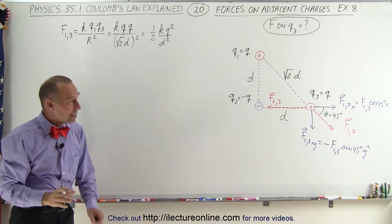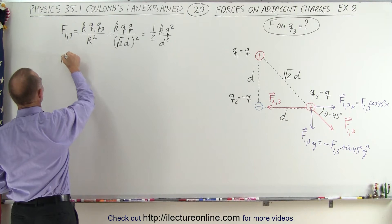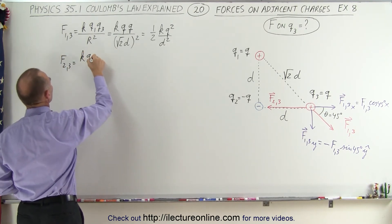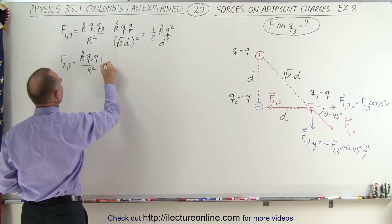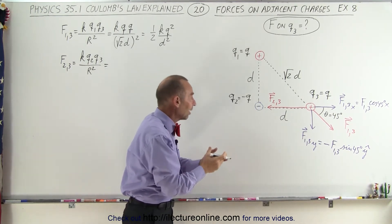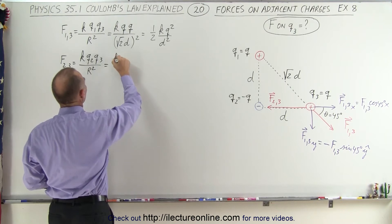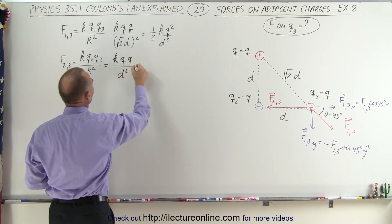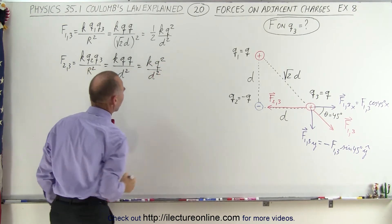Now we find the magnitude of the force between charge 2 and charge 3. The force F2,3 equals k times q2 times q3 divided by the distance squared. Even though q2 is a negative charge, we're simply going to find the magnitude of that force, so we don't have to worry about the negative sign. This becomes kq times q divided by d squared, or kq² divided by d².